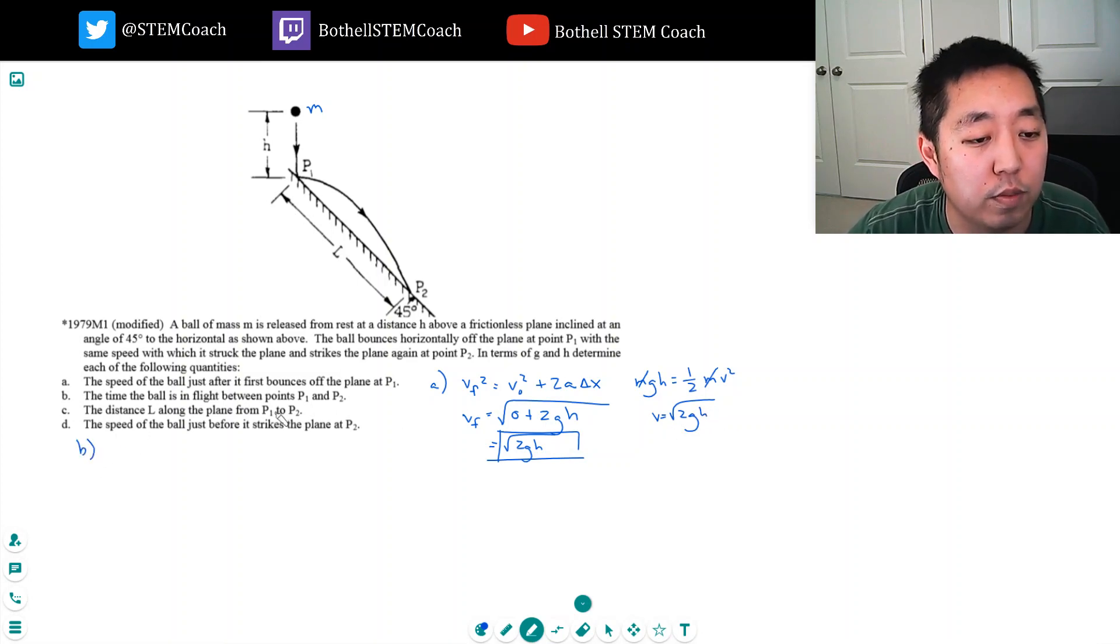Okay, part b: the time the ball is in flight between point P1 and P2. Okay, so now we know it comes off with this velocity, square root of 2gh, and I know this length here is l, and I know it hits this point.